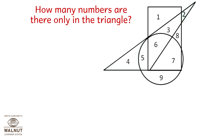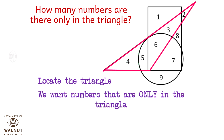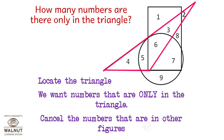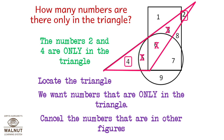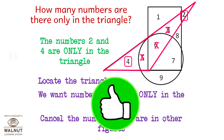How many numbers are there only in the triangle? Locate the triangle. We want numbers that are only in the triangle. Cancel the numbers that are in other figures — cancel out 5, cancel out 6, cancel out 3. That leaves us with the numbers 4 and 2. The numbers 2 and 4 are the only ones in the triangle.